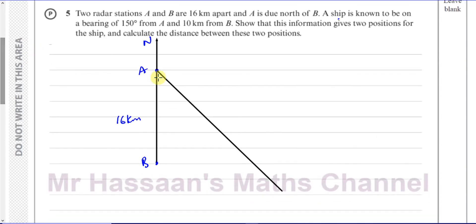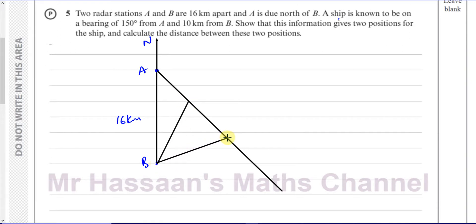The ship is exactly 10 kilometers from B, so from B to the ship would be 10 kilometers. There's going to be another line which is also 10 kilometers where the ship could also be. Let's call this S1, the first position the ship could be at, and S2, the next position the ship could be at. That's 10 kilometers, as is this 10 kilometers. And this bearing is 150 degrees. So these are the two possible positions of the ship.